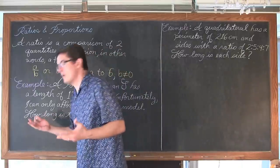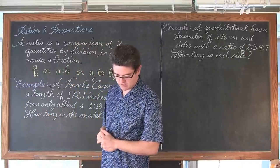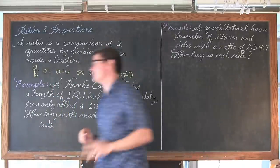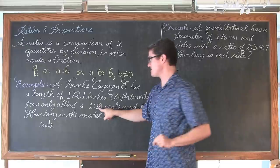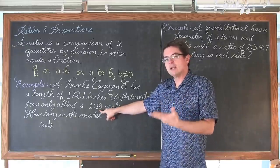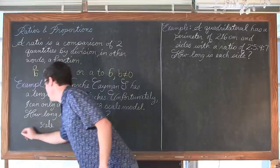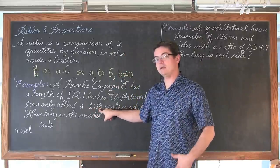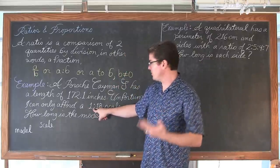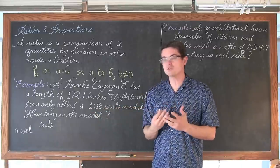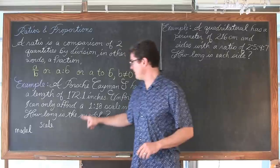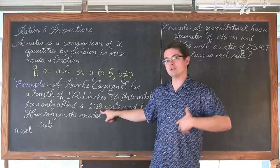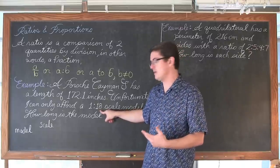We have a scale, and our scale is 1 to 18. That tells you how the model relates to the actual item. This colon is our 'to,' our division. When I see a 1 and an 18, I'm asking for length — so what measurement of length is for the model? It is certainly the 1, not the 18. The 18 is a bigger number, so that is going to be the actual length of the car, not the length of the model.